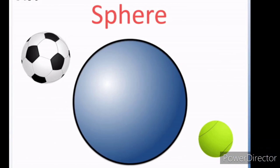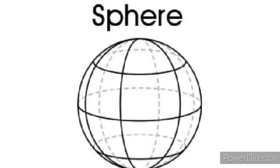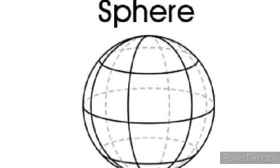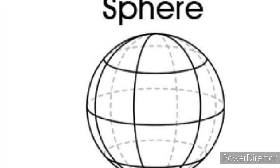Sphere is nothing but, if you take a ball, that is a sphere. The shape of a ball is a sphere. So you can see that it doesn't have any edges or any corners.